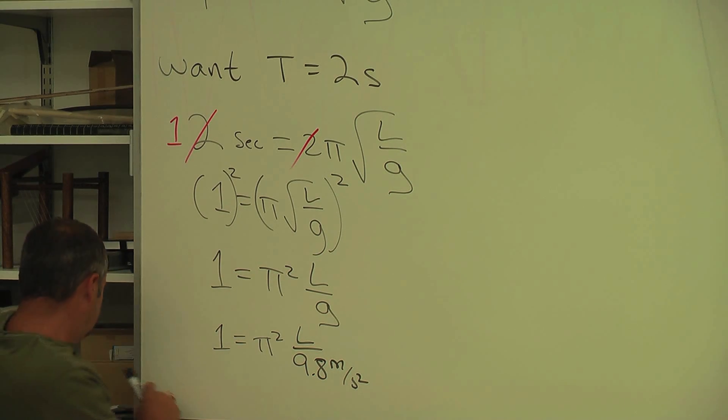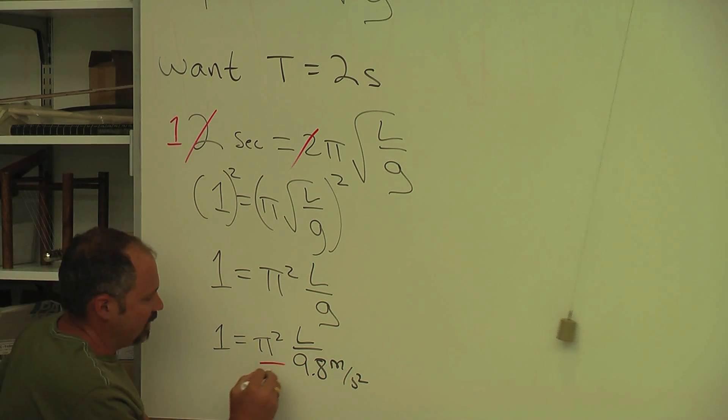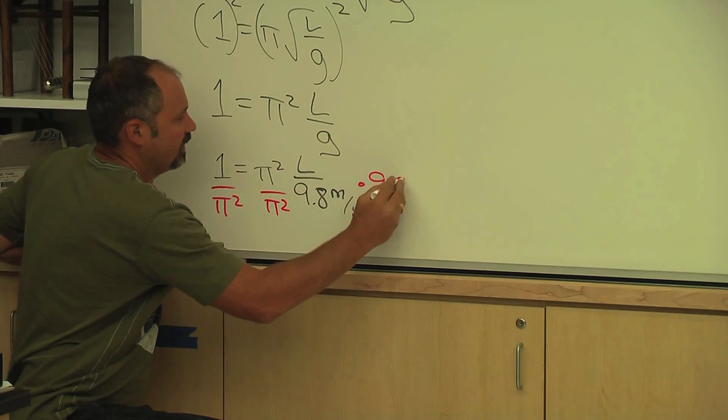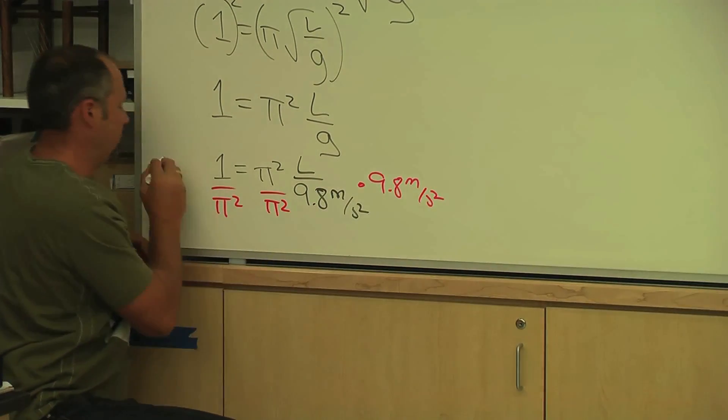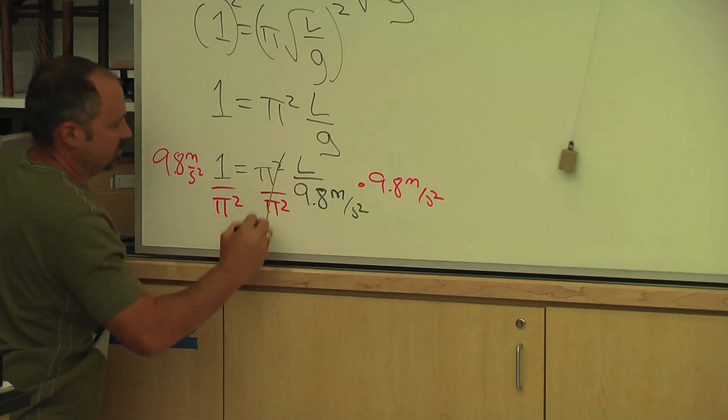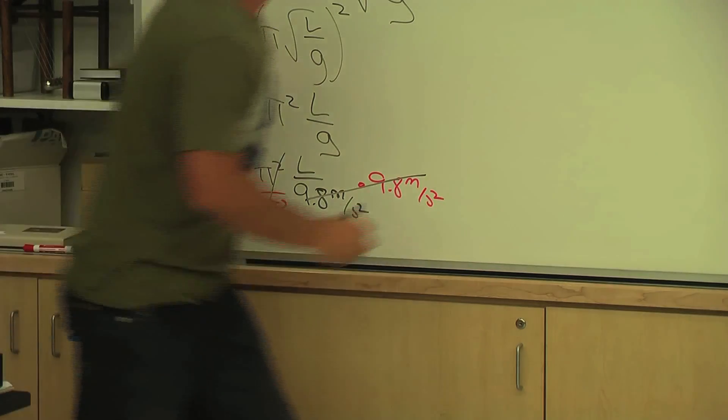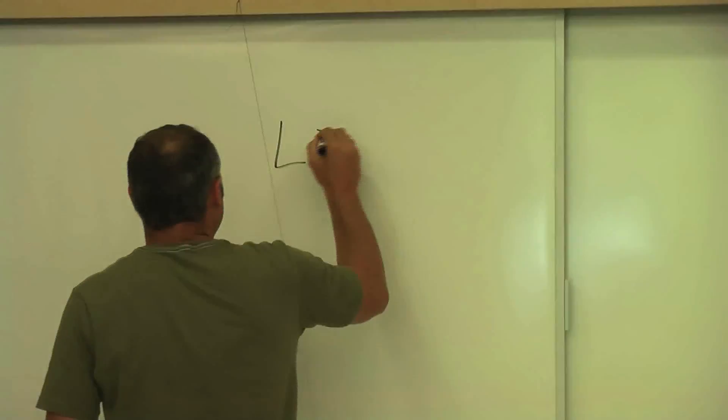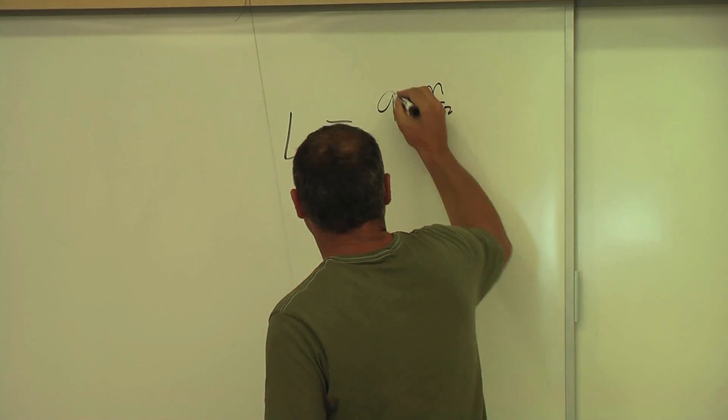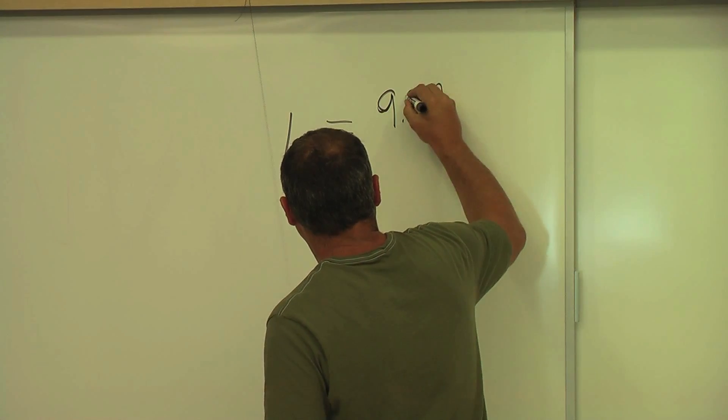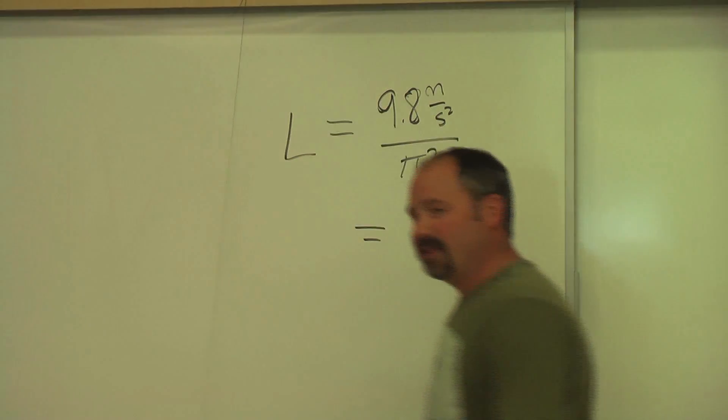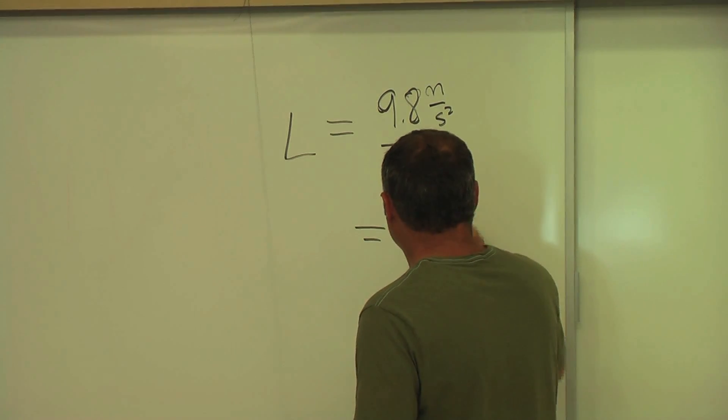Now all we have to do is solve for l. So I'll do that by dividing both sides by pi squared, and multiplying both sides by the 9.8 meters per second squared. And these guys cancel. And now I've isolated the l. l is equal to 9.8 meters per second squared divided by pi squared. And if you plug that into a calculator, you get almost exactly a meter.